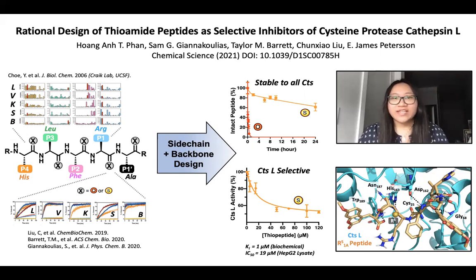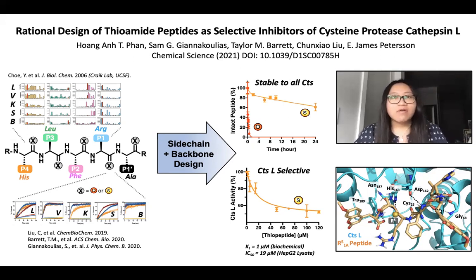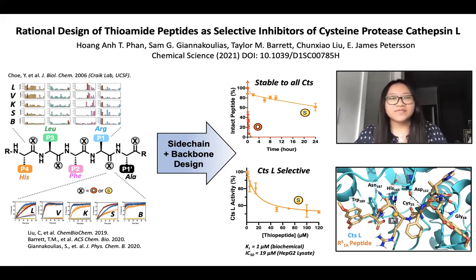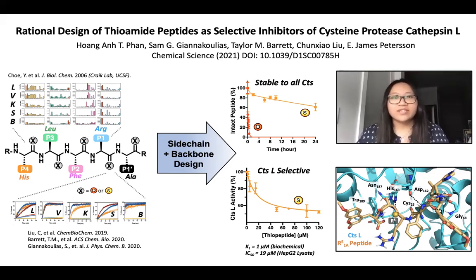Cathepsin-L is a cysteine protease that has been implicated in many different diseases including cancers and recently SARS-CoV-2. However, it is really challenging to design specific Cathepsin-L inhibitors because it is really similar to other proteases in the Cathepsin family like Cathepsin-V, K, S, and B.